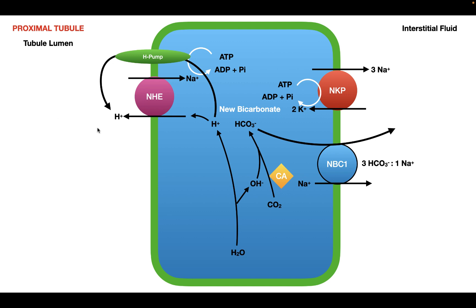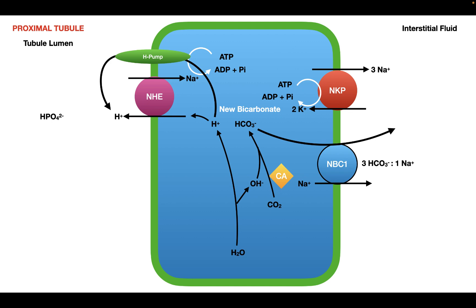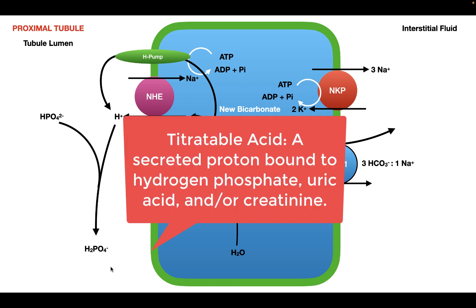So what happens to the proton when it's in the tubule lumen? This proton combines with different bases inside the tubule lumen. The base we're looking at today is hydrogen phosphate. Hydrogen phosphate accepts the proton, which forms dihydrogen phosphate, and this dihydrogen phosphate can move along the nephron and be excreted in the urine.